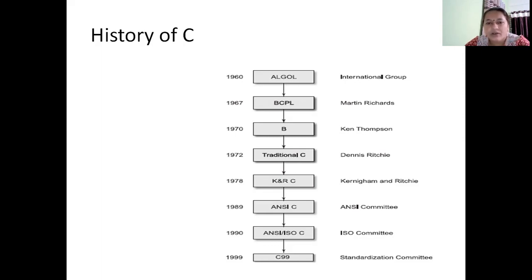The programming language most preferred by programmers is a high-level language, since the other two types — machine language and assembly language — have their own disadvantages when it comes to programming. So people started to prefer using high-level languages. Way back in 1960, the language Algol, which was a high-level language, came into existence.